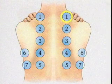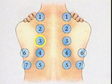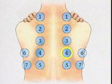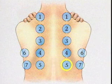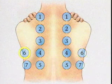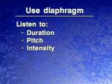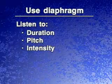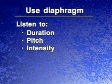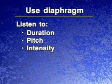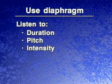To auscultate the posterior thorax, begin at the apices and proceed downward, moving systematically from side to side and comparing the sounds in symmetrical areas. Using the diaphragm of the stethoscope, listen to at least one entire breathing cycle at each location.